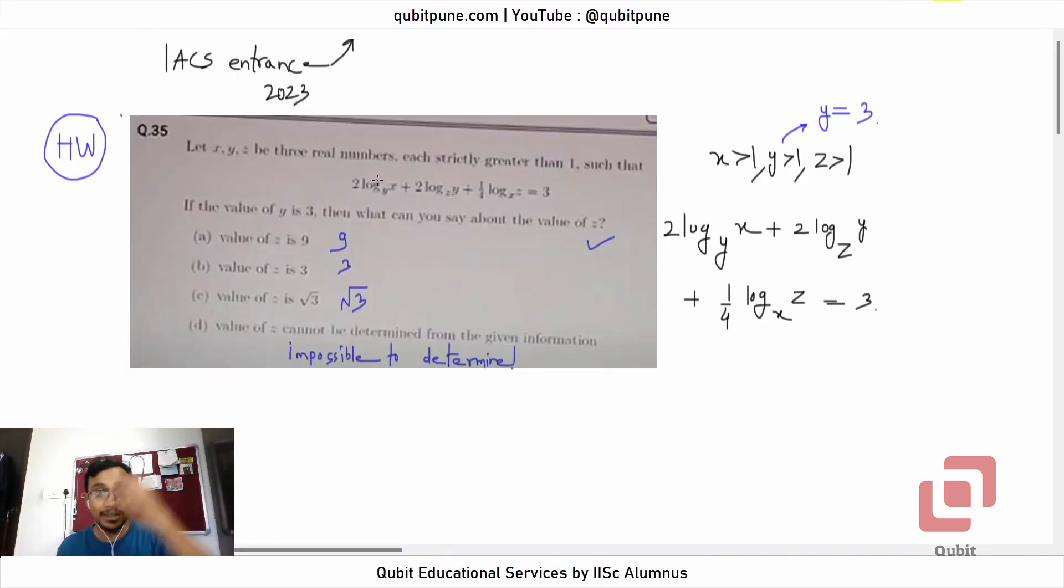There are three real numbers x, y, and z, each strictly greater than 1, such that 2 times log of x to the base y plus 2 times log of y to the base z plus 1 by 4 log of z to the base x equals 3.